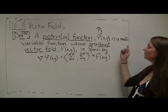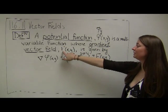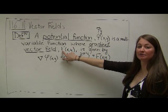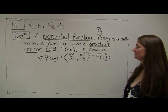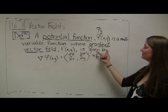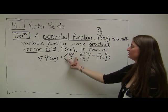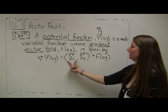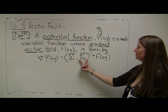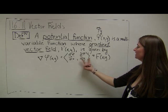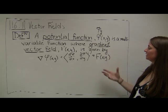Our potential function phi is a multivariable function whose gradient vector field — capital F of xy — remember that whenever we talk about functions that have outputs that are vectors, we typically capitalize the function. It's given by the gradient of phi, which equals the partial derivative of phi with respect to x in the first component, and the partial derivative with respect to y in the second component, and that equals F.